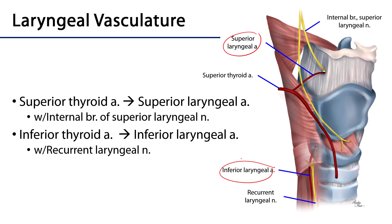Let's take a look at where they come from. As we follow the superior laryngeal artery's path, we see that it arises from the superior thyroid artery. That superior thyroid artery is a branch of the external carotid artery, a major artery which supplies the neck, face, and head with blood.